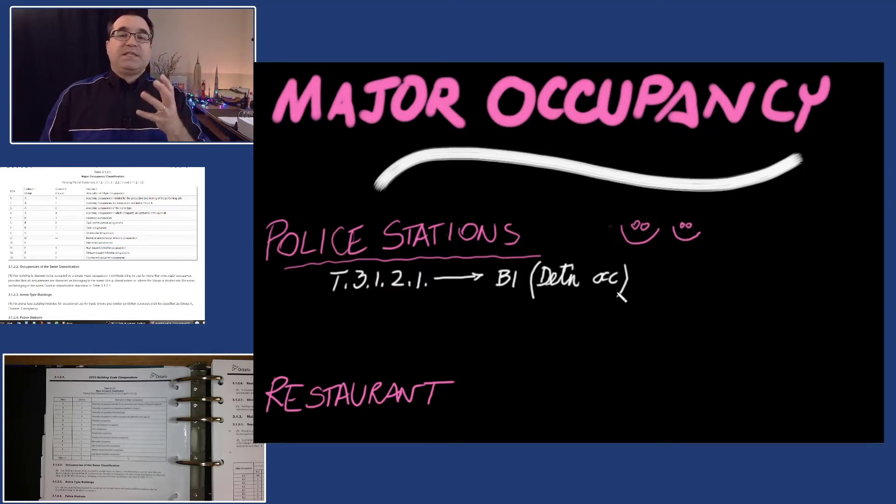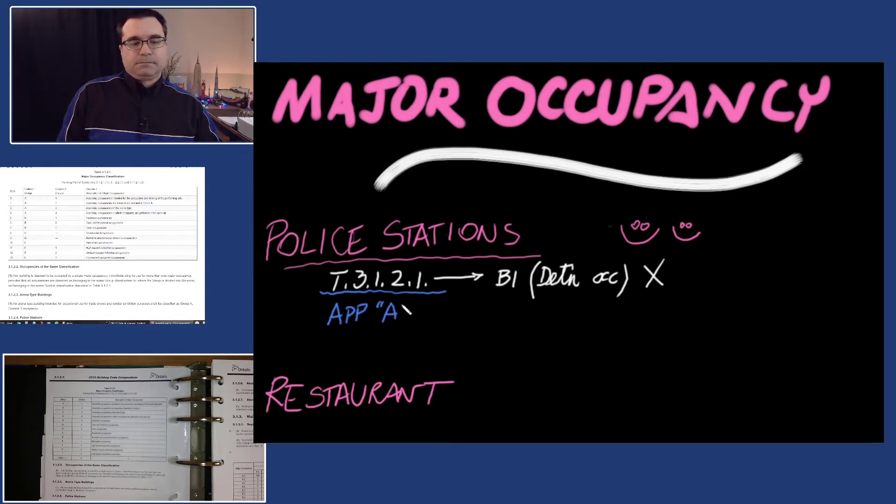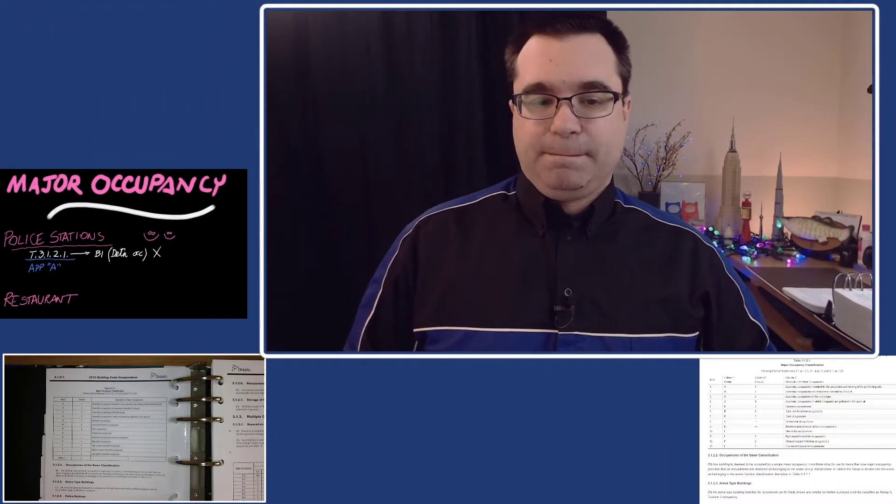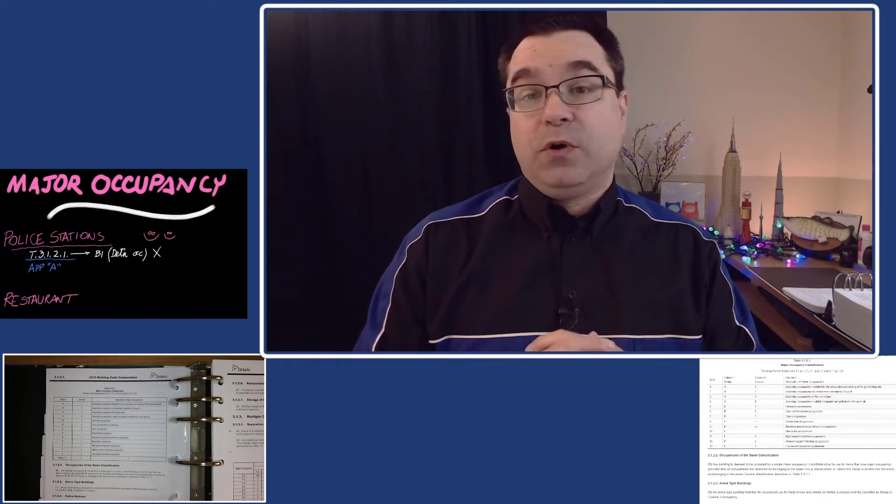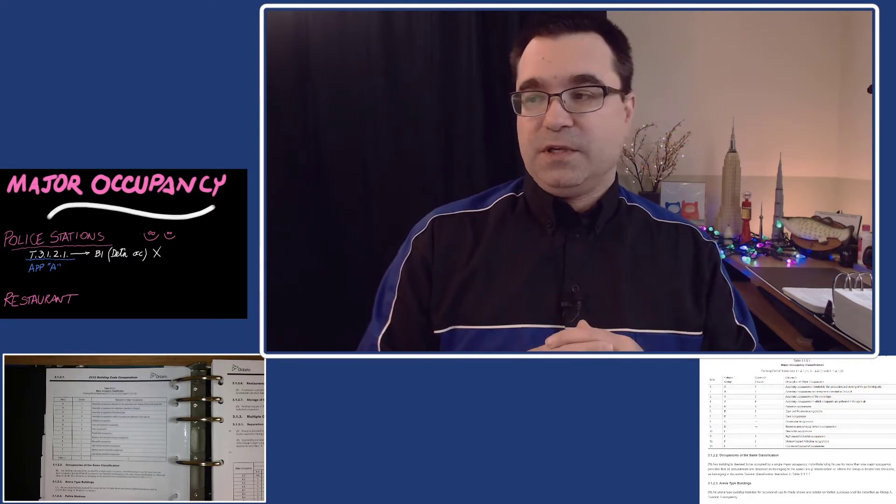Well no, that's the whole point of this video. If this had been a test or exam in our course, this would be a zero. That's because it's a bad habit to get into to start with this table as the first and only place to go to find the major occupancy of a building. I claim the better place to start instead is Appendix A.